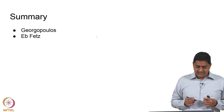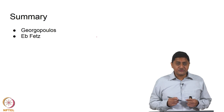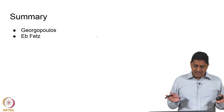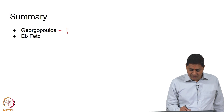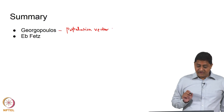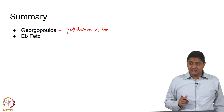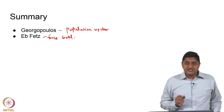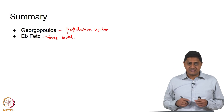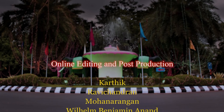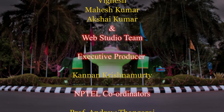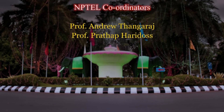In summary, this class covered the seminal work of Apostolos Georgopoulos showing that the direction of movement is encoded by a population of neurons using the population vector technique, and the work of Evfetz showing that the level of force is encoded by the activity of primary motor cortex neurons. We will stop here and continue these discussions in future classes. Thank you very much.